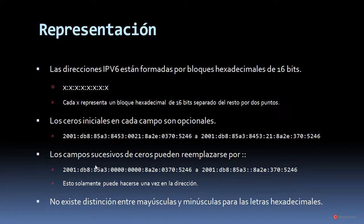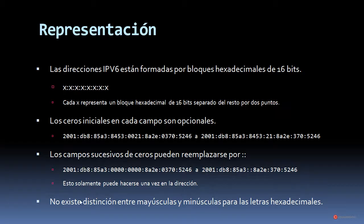Hay que comentar que esto solamente puede hacerse una vez en la dirección. Si tuviéramos, por ejemplo, dos bloques de ceros, luego un bloque normal y otros dos bloques de ceros, solamente podríamos resumir uno de ellos. El otro conjunto de dos bloques podríamos resumirlos en 0. Además, no existe distinción entre mayúsculas y minúsculas para las letras hexadecimales de las direcciones IPv6.